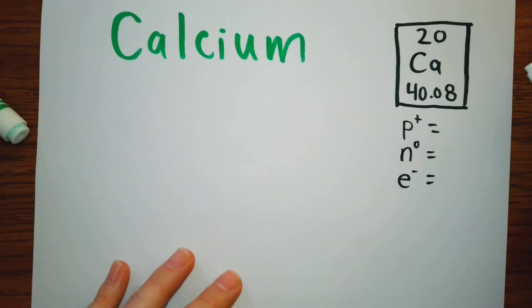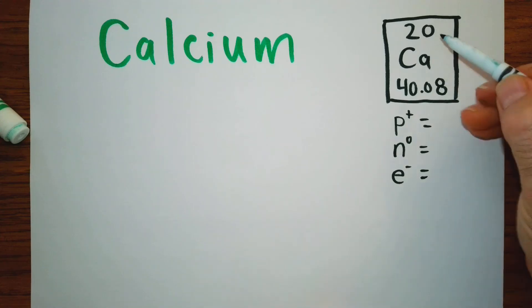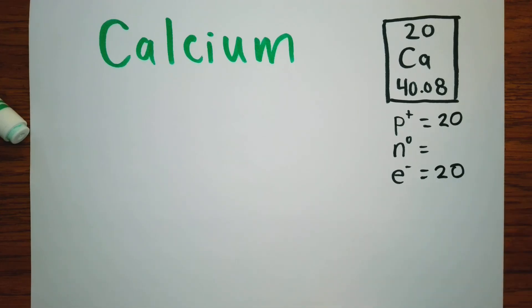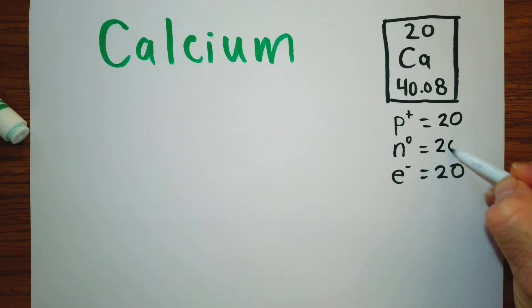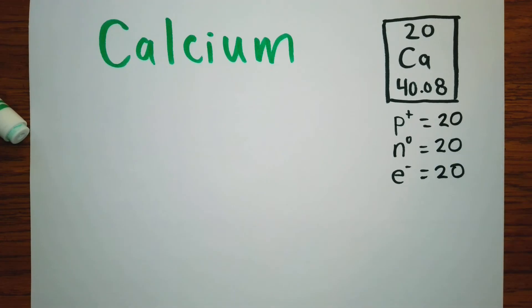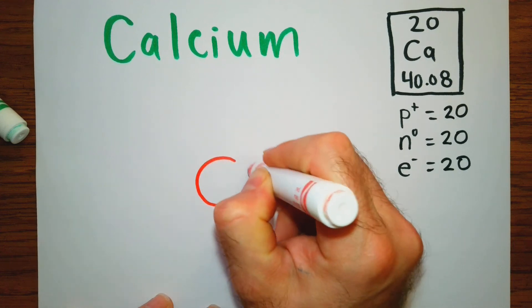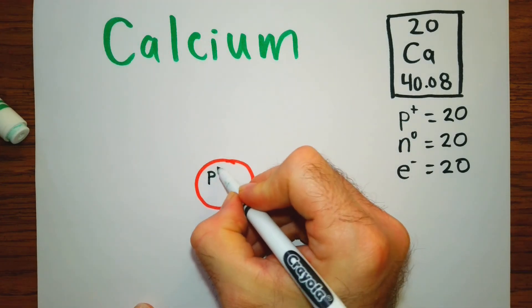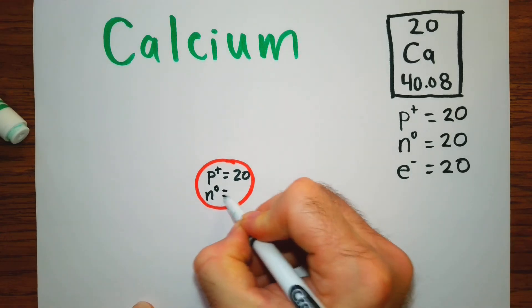Let's do calcium — probably the hardest one we have. Our atomic number is 20, so we have 20 protons and 20 electrons. Our atomic mass is 40.08, which rounds to 40, so we do 40 minus 20 and that gives us 20 neutrons. We draw our nucleus with protons equals 20 and neutrons equals 20.